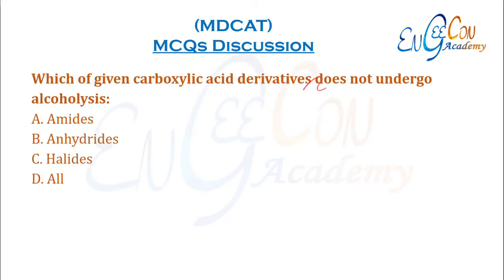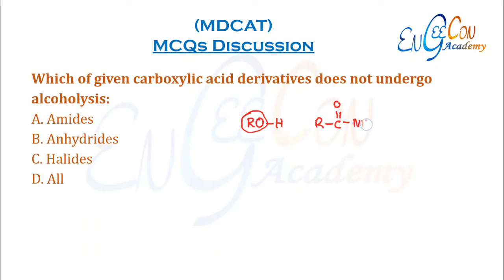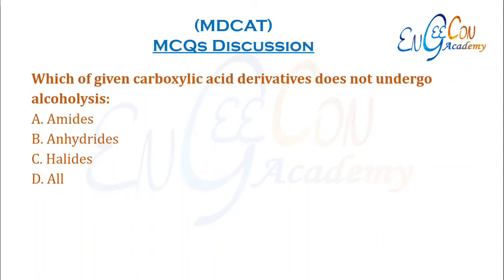Which of the given carboxylic acid derivatives does not undergo alcoholysis? Alcoholysis is performed by alcohol, where –OR acts as a nucleophile replacing another nucleophile. In amides, the –NH2 group is a stronger nucleophile and cannot be directly replaced by –OR. So amides do not undergo alcoholysis.